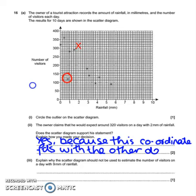And then part three, explain why we should not use the scatter diagram if there's 9 millimeters of rainfall. So you can see, here's 9 millimeters of rainfall. There is no data at all that has anything to do with 9 millimeters of rainfall. So it's dangerous, therefore, to make an estimate based on data that we don't have.